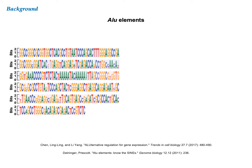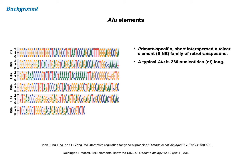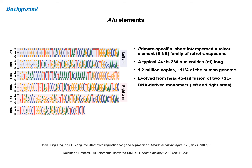Alu elements are primate-specific retrotransposons. A full-length Alu is 280 nucleotides long, and its consensus sequence is shown on the left. There are 1.2 million copies of Alus in the human genome. It evolved from the fusion of two 7-SL RNAs called its left and right arms.